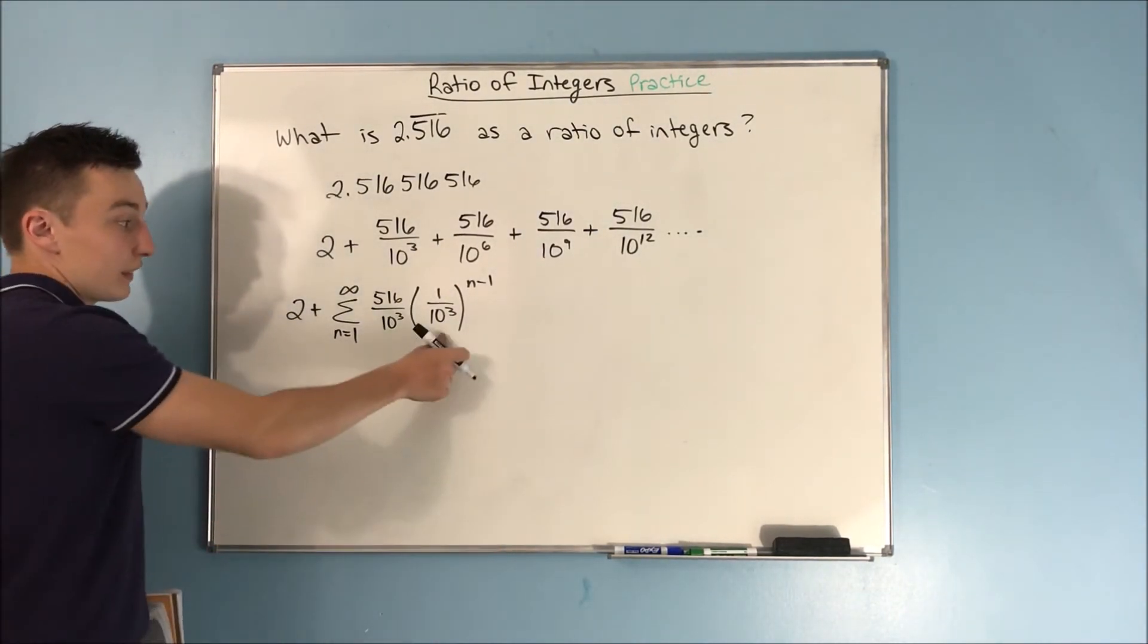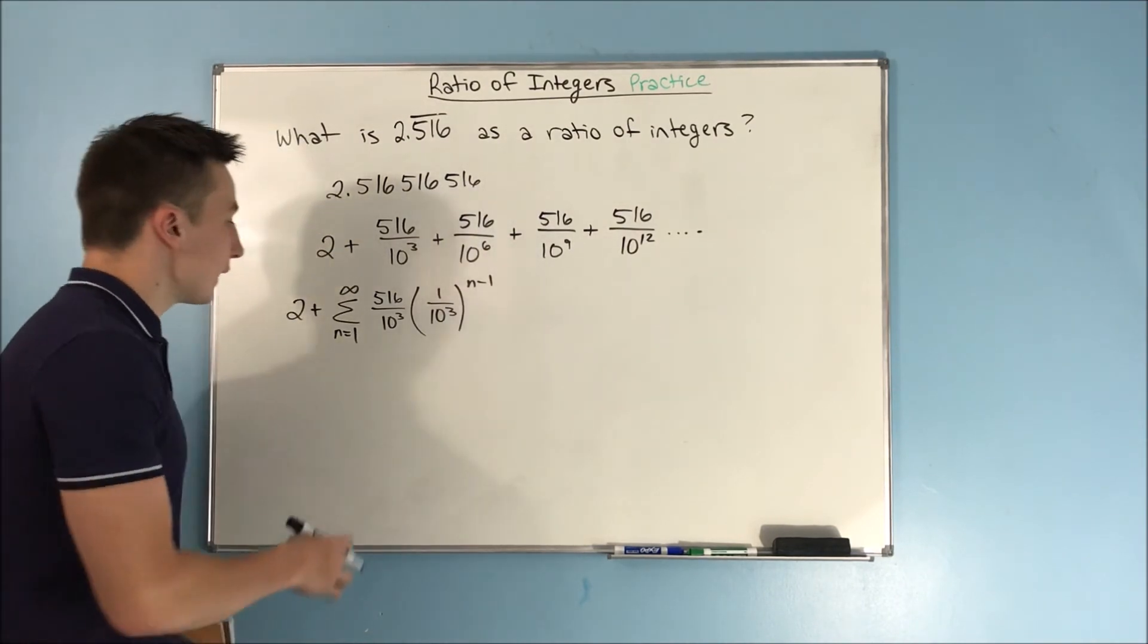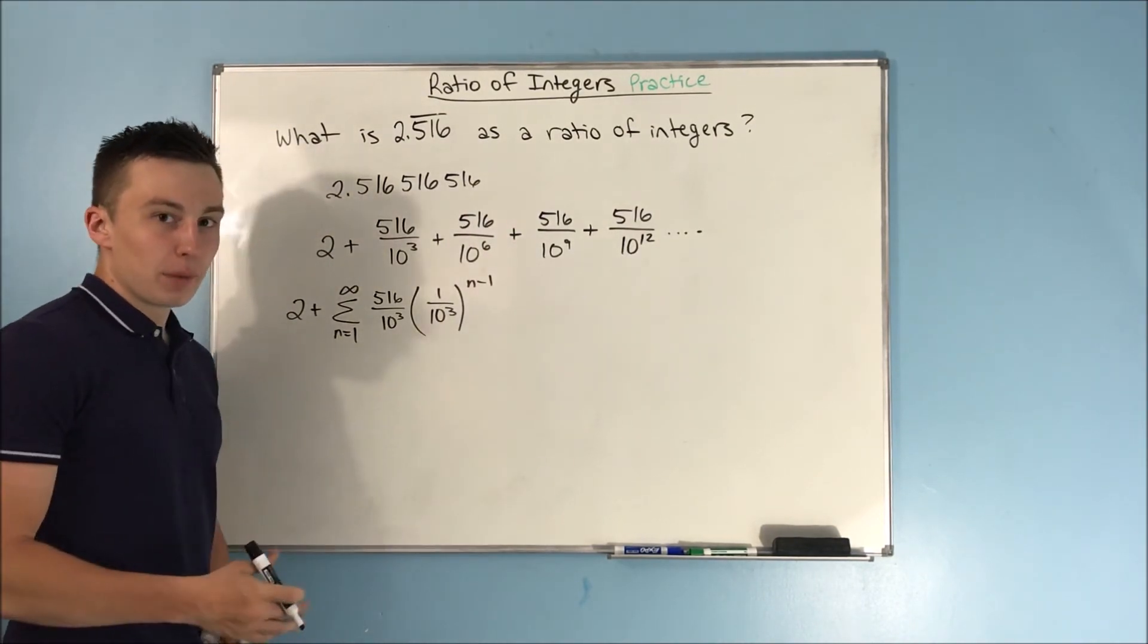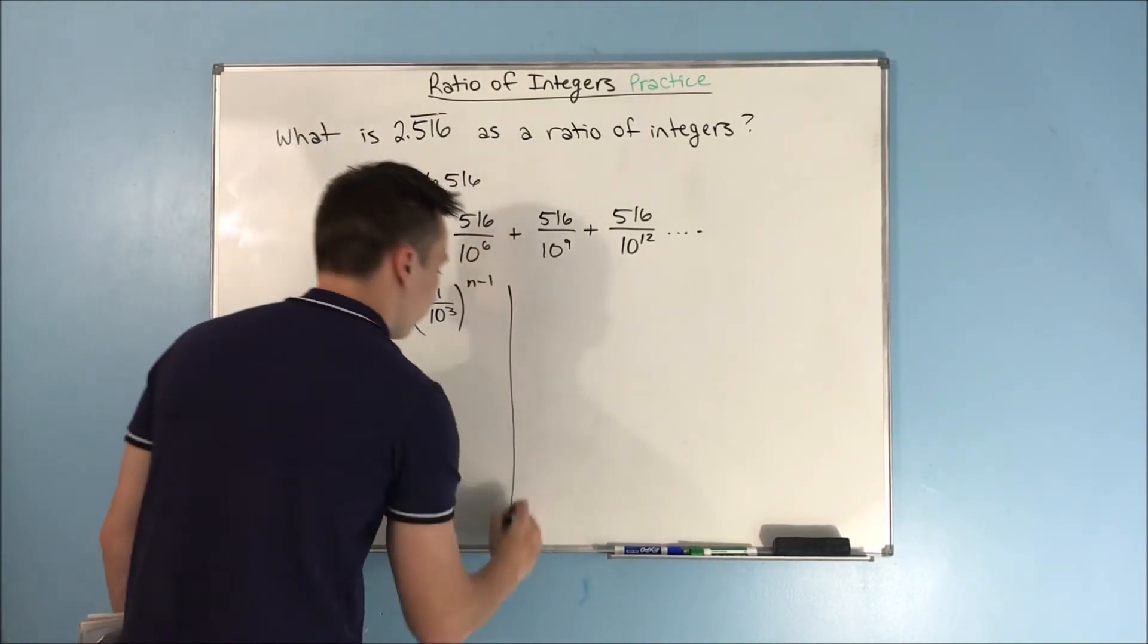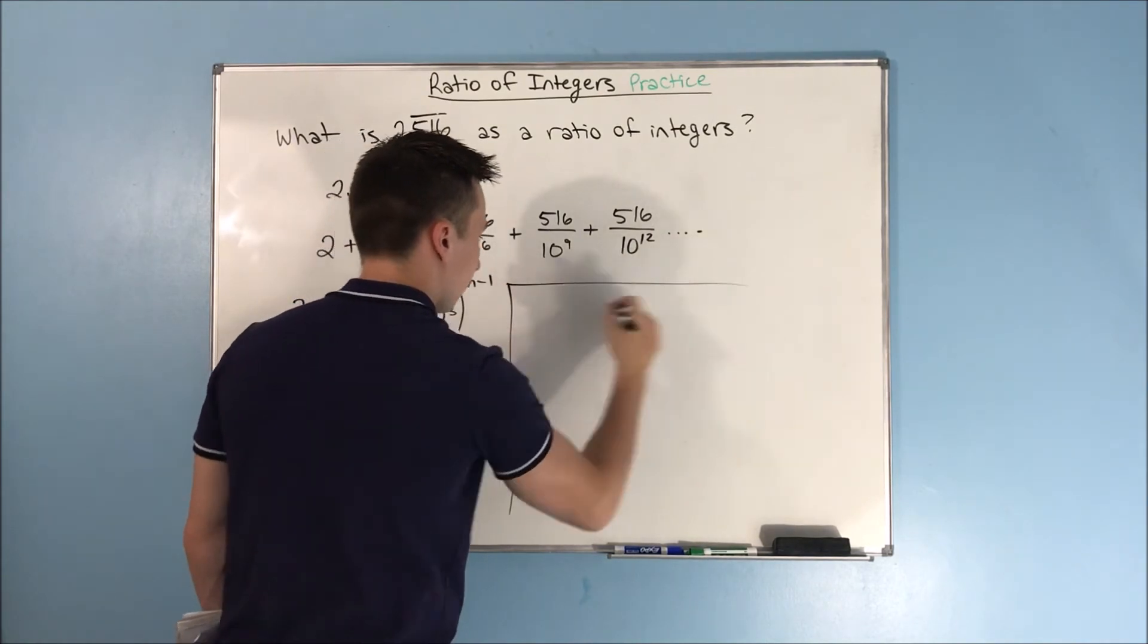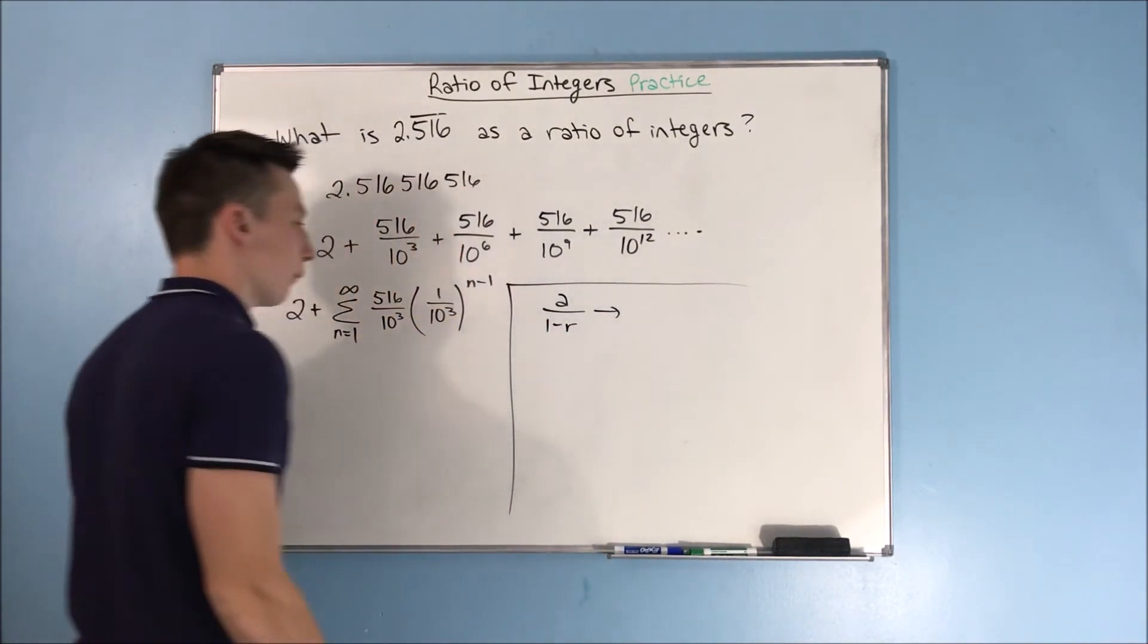So, well, this 1 over 10 cubed, that's between negative 1 and 1. We know that this infinite series converges, so we can find the sum. And how do we find the sum? We're going to have to use a over 1 minus r, as we did in the last problem.